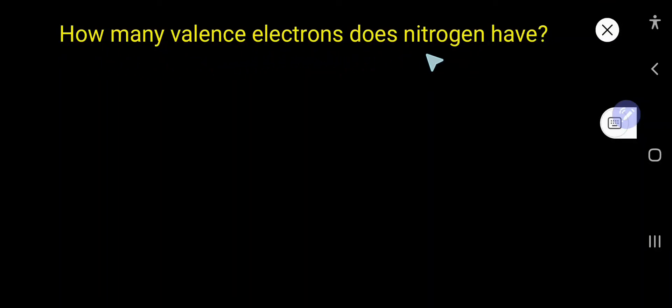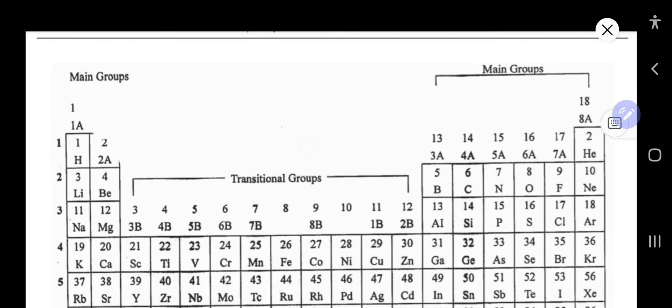How many valence electrons does nitrogen have? Nitrogen has five valence electrons. Let me show you two ways to find the valence electrons for nitrogen. First way: look for main group elements.